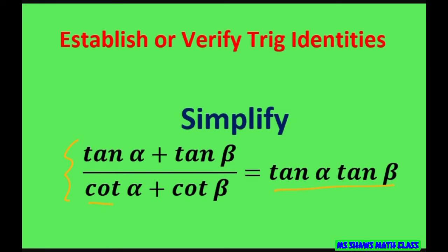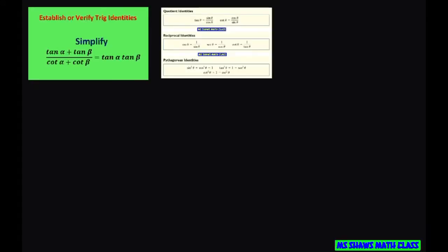So what I'm going to do is write everything in terms of tangent since we have tangent here on the right hand side. Let's rewrite this as tan alpha plus tan beta divided by 1 divided by tan alpha plus 1 divided by tan beta.